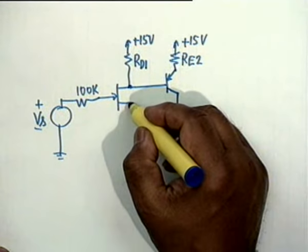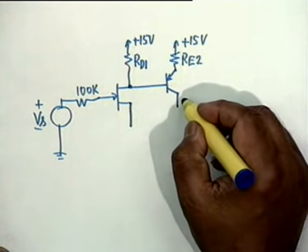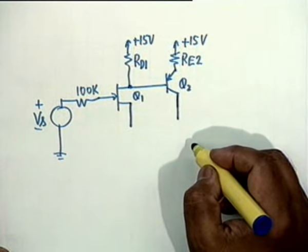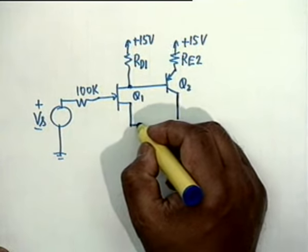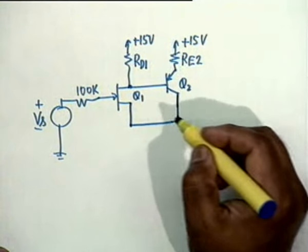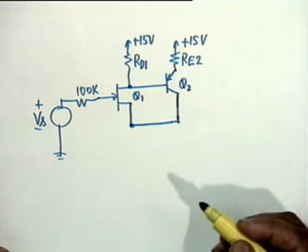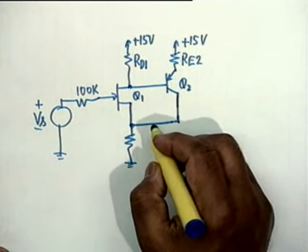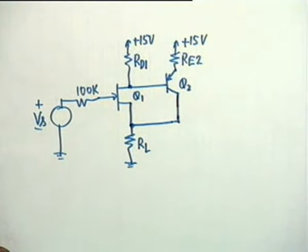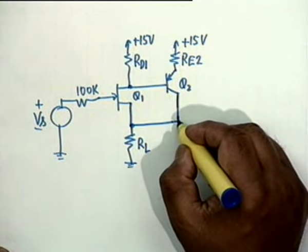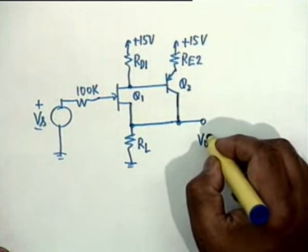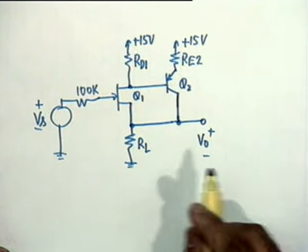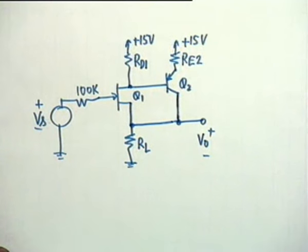It is very easy to make a mistake and therefore you should be careful. This is Q2, we call this Q1. The source and the collector are connected together and there is a resistance to ground here which is RL. The output is taken from here, V0. It is a somewhat unconventional circuit.